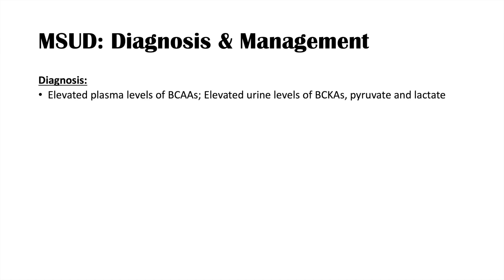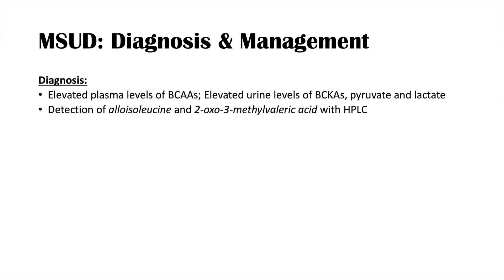Diagnosis is made by detecting elevated plasma levels of branched-chain amino acids, and elevated urine levels of branched-chain ketoacids, pyruvate, and lactate. Diagnosis can also be made by detection of allo-isoleucine and 2-oxo-3-methylvaleric acid using HPLC, and this condition can also be identified through newborn screening.